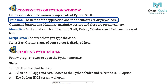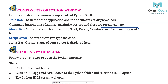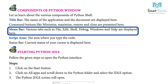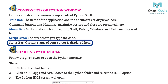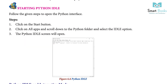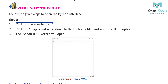Components of the Python window: Let us learn about the various components of the Python shell. Title bar: the name of the application and the document are displayed here; command buttons like minimize, maximize, restore, and close are presented here. Menu bar: various tabs such as File, Edit, Shell, Debug, Windows, and Help are displayed here. Script area: the area where you type the code. Status bar: current status of your cursor is displayed here.